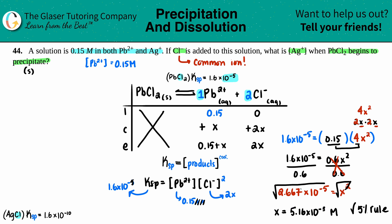Now we want the concentration of the common ion Cl⁻. From the ICE table, [Cl⁻] = 2x, so: 2 × 5.16×10⁻³ = 0.01032 M. Let's box that answer — we'll use this for the next part of the problem.